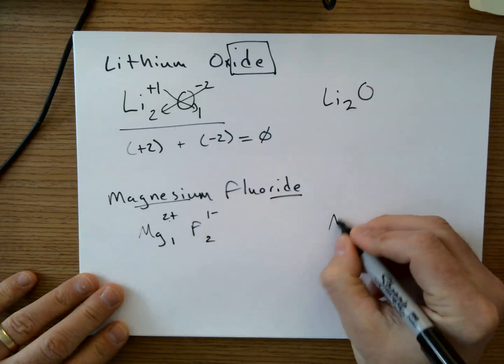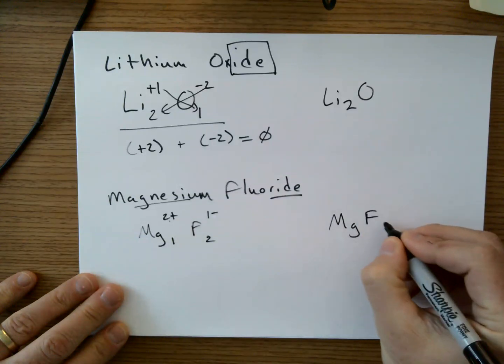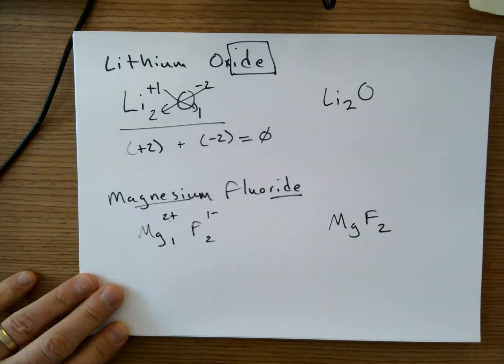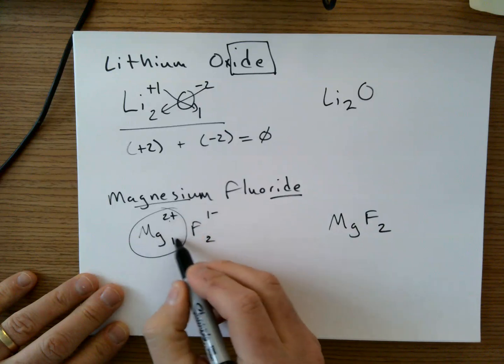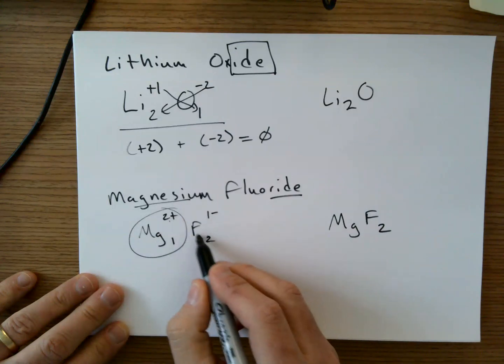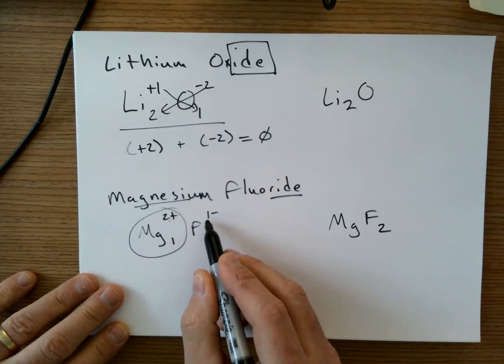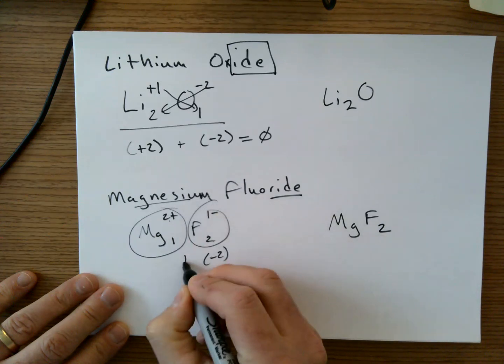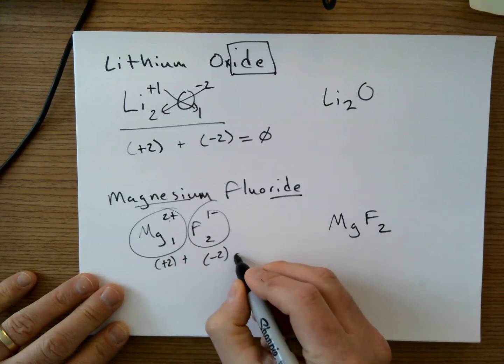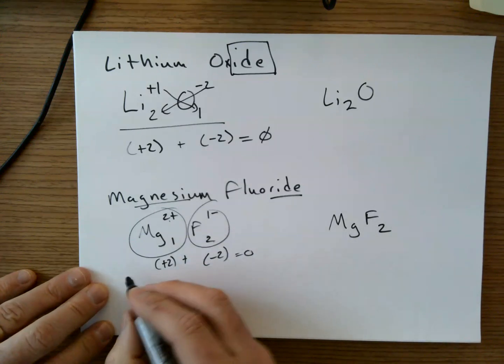And then when we rewrite it, we do not need to rewrite the ones. There we go. So again, think about this. It takes one magnesium ion with a positive two charge to neutralize out two fluoride ions, each with a negative one charge. This side is a total negative two. This side is a total positive two. And that equals zero.